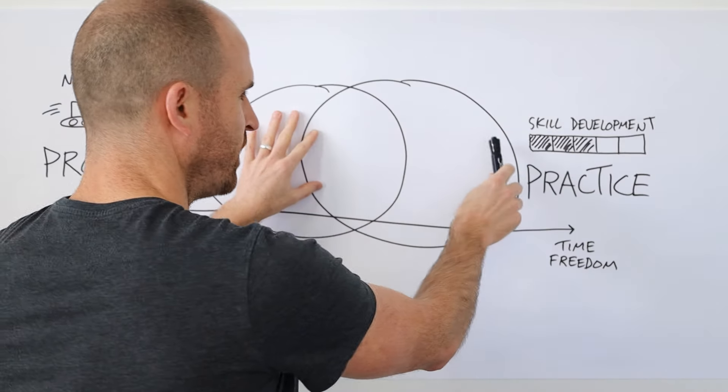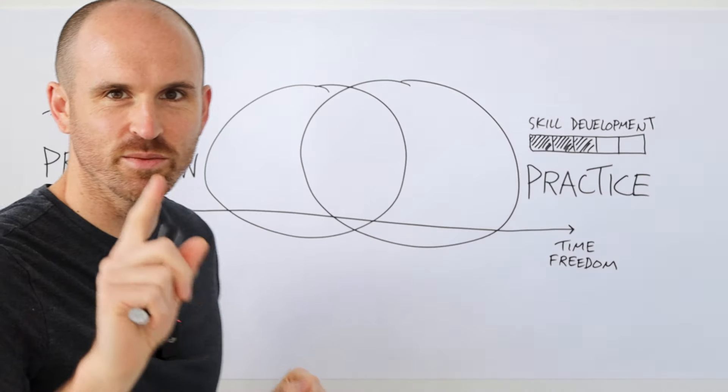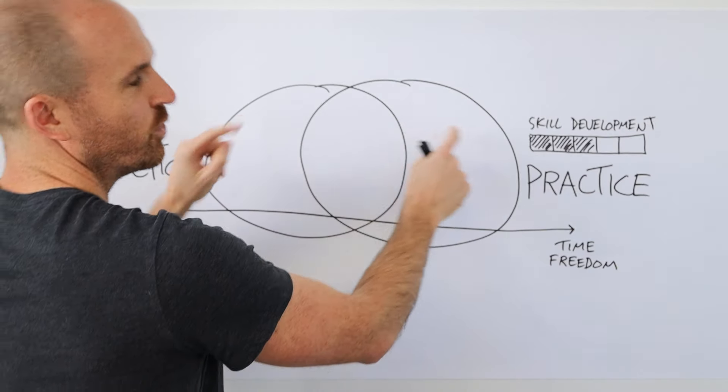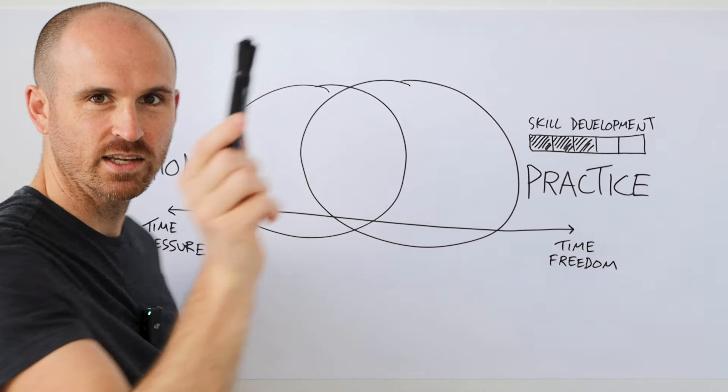But as suggested by this Venn diagram and this spectrum of time, it's not just a binary. We've actually got three distinct modes that you might be in, three places where you might live. Let's give each of those a name.